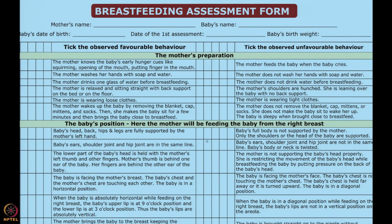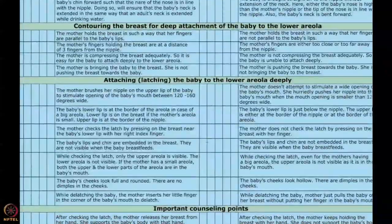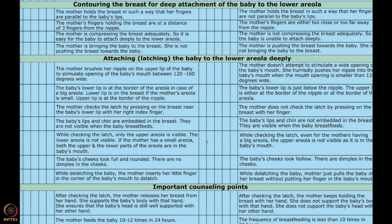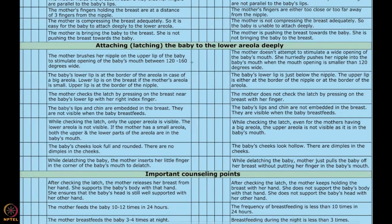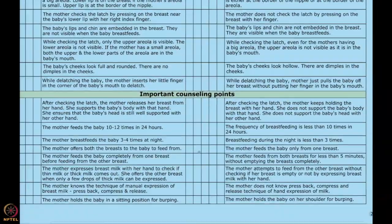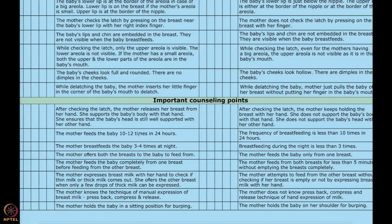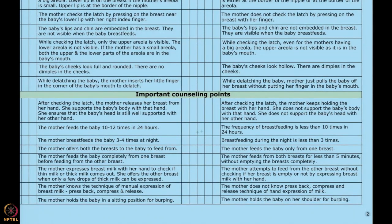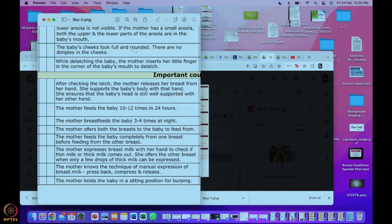Anything tick-marked on the right side gives you a point to discuss. The most important part of this breastfeeding assessment form is latching. If you have a latching issue, these babies can't go home because the baby is not getting any milk — the baby will go home hungry and won't put on weight. These are the attachment points we have created. Important counseling points include asking whether mother feeds ten to twelve times in 24 hours.